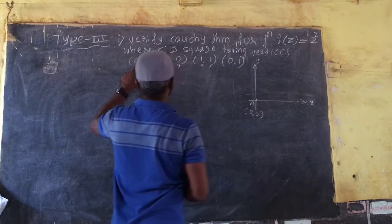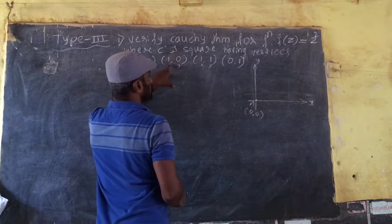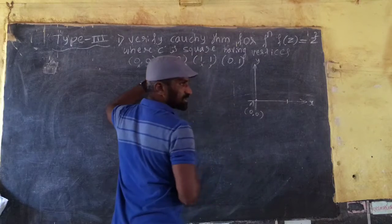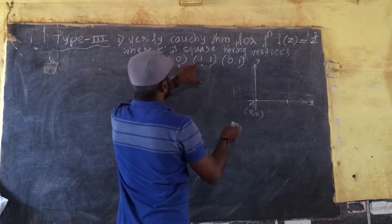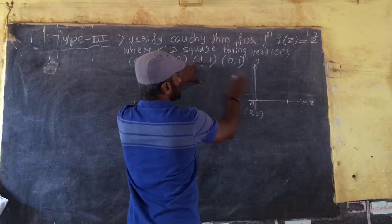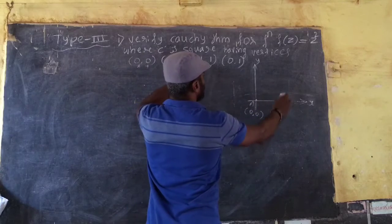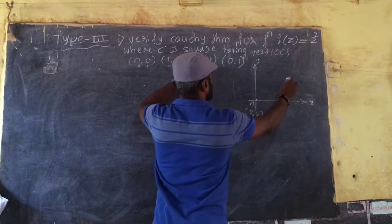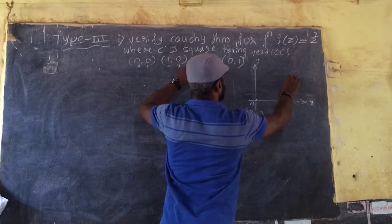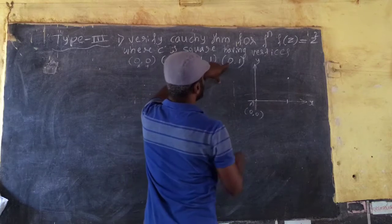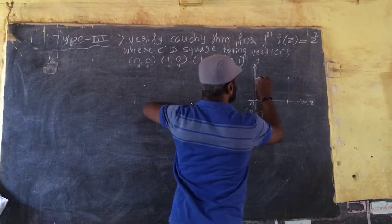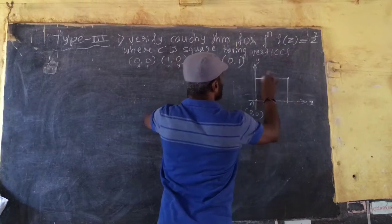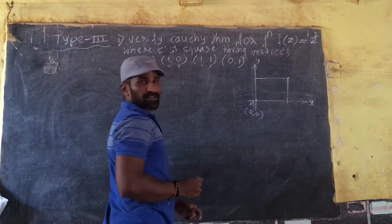So, the vertices: (0,0), then (1,0) — x is equal to 1. Next, (1,1) where y is equal to 1. Then x is equal to 0, y is equal to 0, and y is equal to 1. Joining these points, it shows that it is a square.